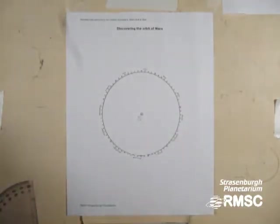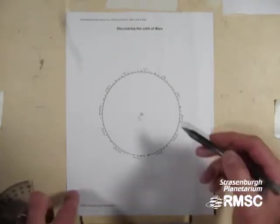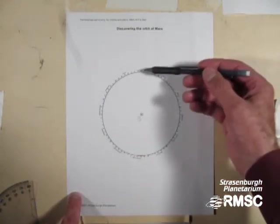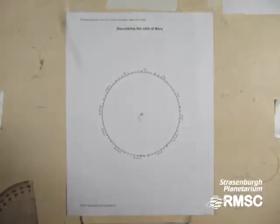Kepler was pretty confident that Copernicus was right in saying Earth revolves around the Sun once a year. So this is the orbit of Earth, and I've got the Earth's place in its orbit for every day of the year marked on this circle.